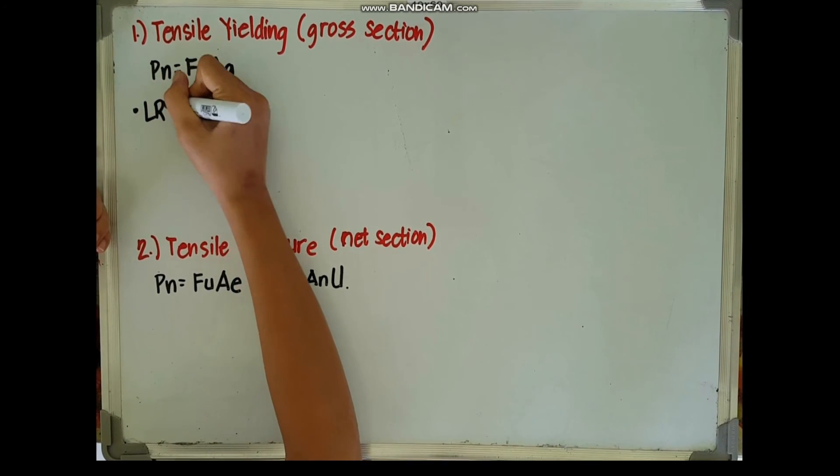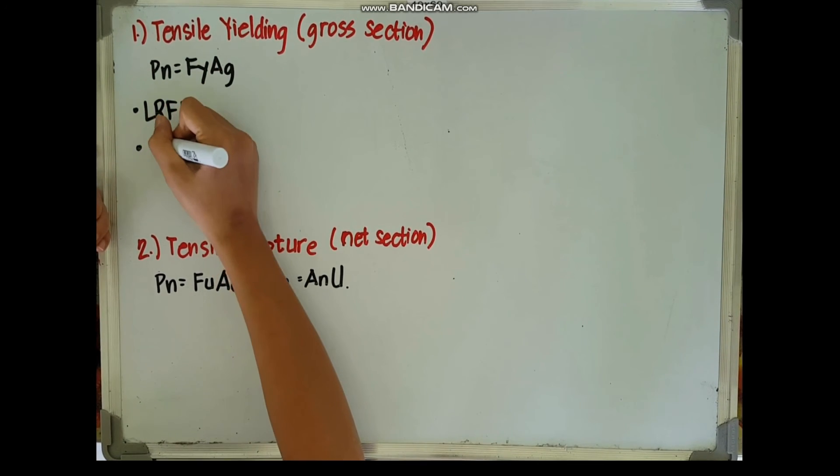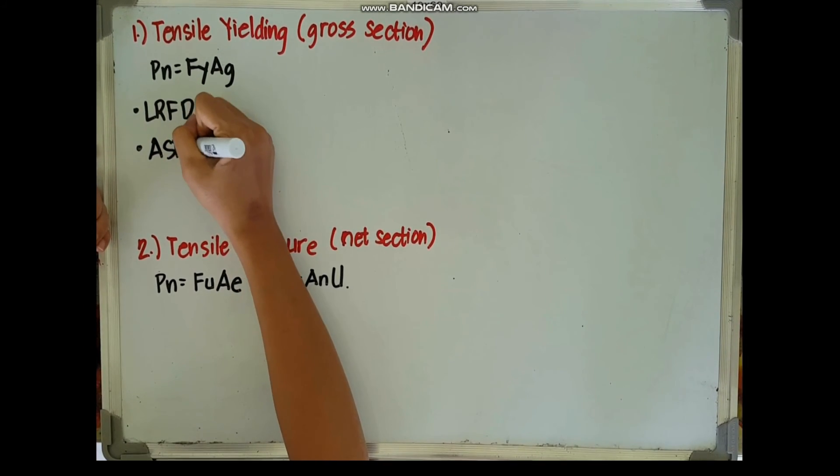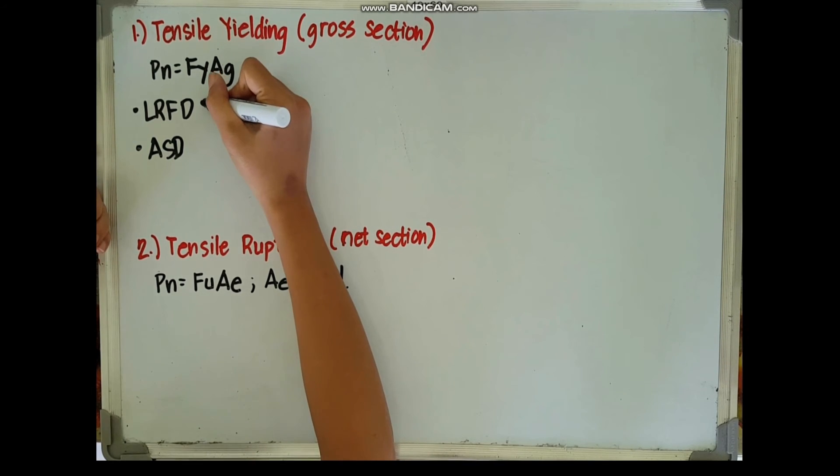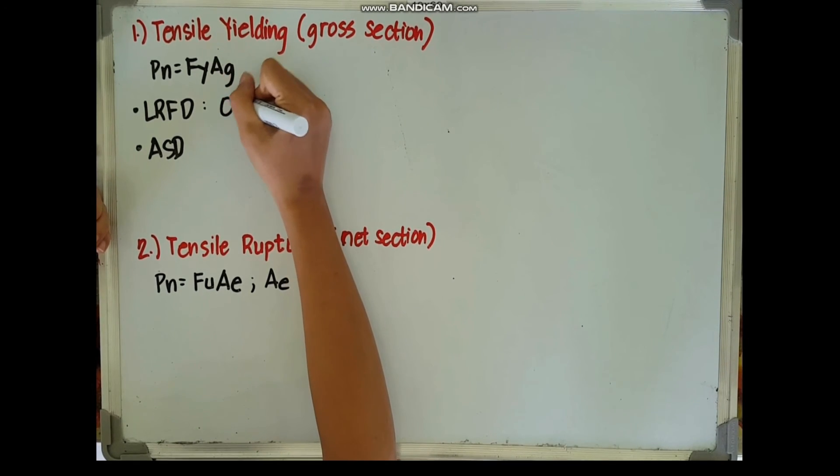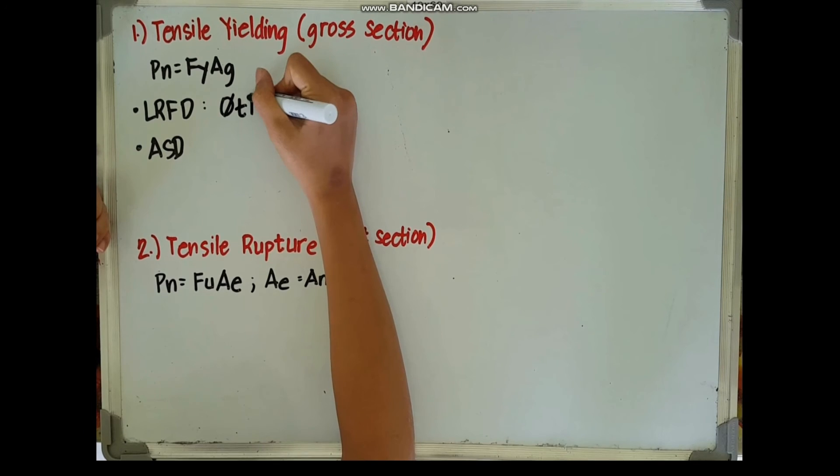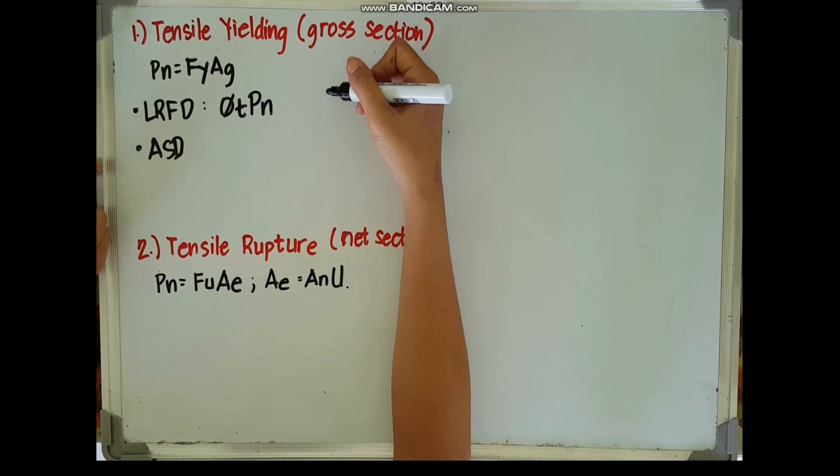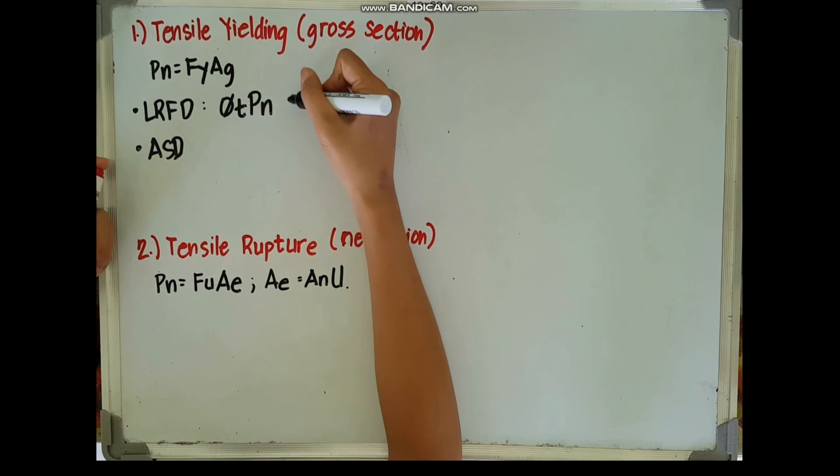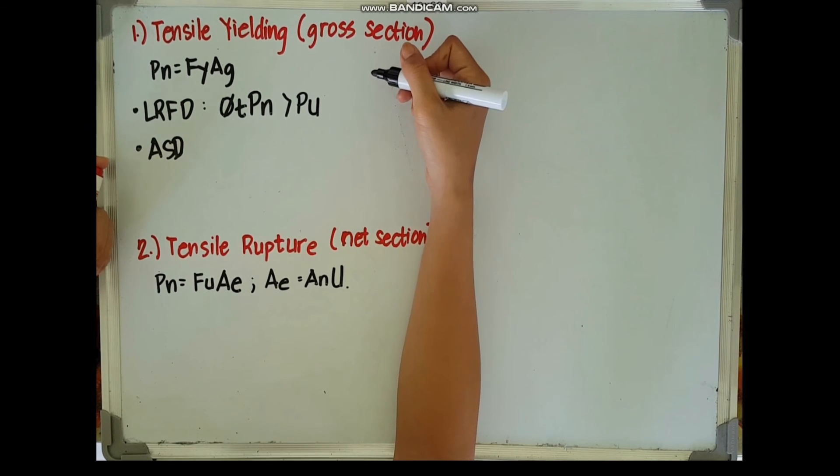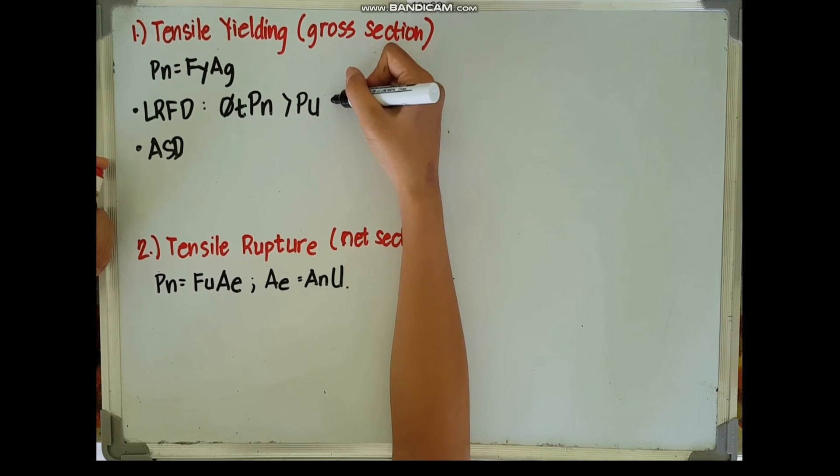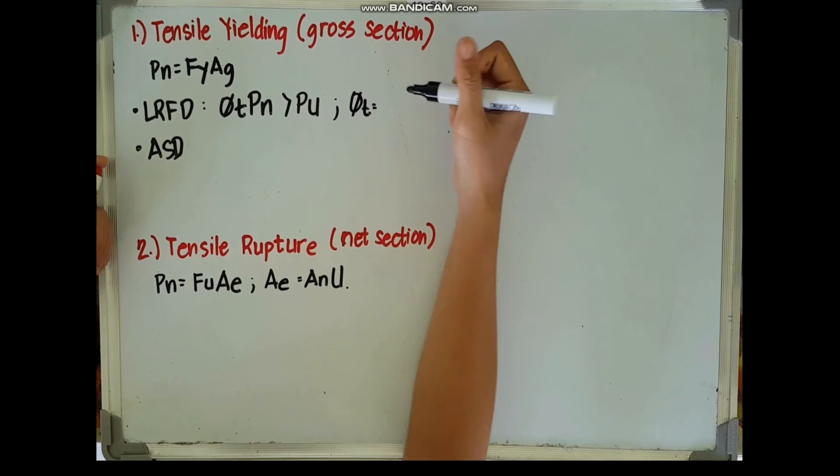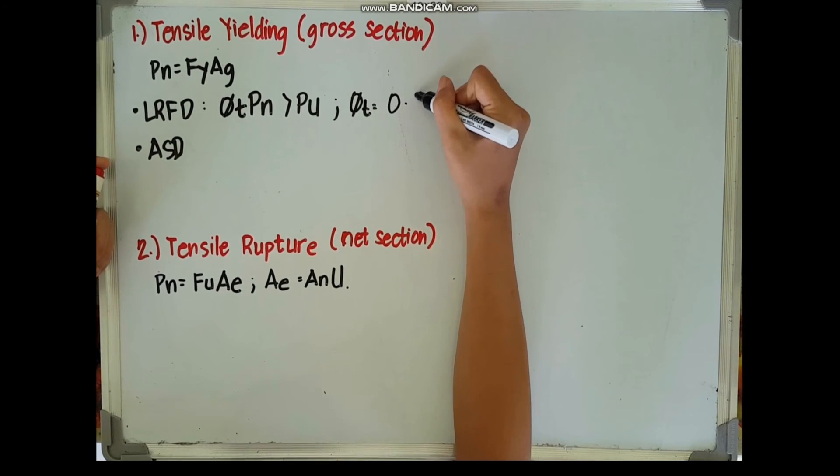So we have two approaches. First is the load and resistance factor design, and the second one is the allowable stress design. Under LRFD, our nominal tensile strength will be multiplied by a certain resistance factor phi and it must be greater than our PU, wherein our resistance factor for tension phi is equal to 0.90.